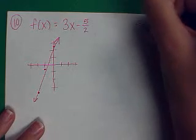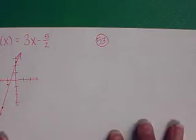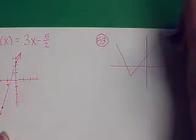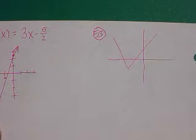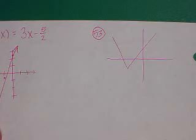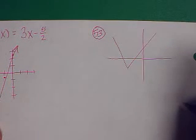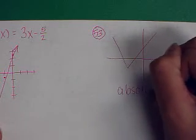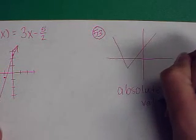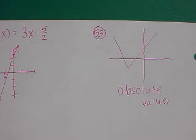On one like number 53, that's the other type of problem that they gave you. They're giving you a graph. For example, it looked like that at number 53. All I want you to do is give me the words for what the parent function is. On this one, you can tell that it's a V shape, so the parent function is the absolute value.